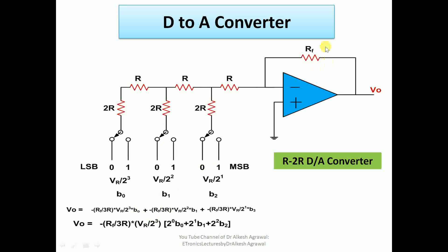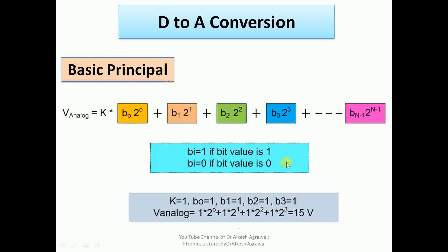Taking −RF/(3R) × VR/2³ as the common factor k, the final expression becomes: V_out = k × [2⁰·B0 + 2¹·B1 + 2²·B2]. This is again the same basic conversion equation. For example, if the input is 1 0 1, then 2⁰×1 + 2¹×0 + 2²×1 = 1 + 0 + 4 = 5, giving approximately 5 volts analog output.